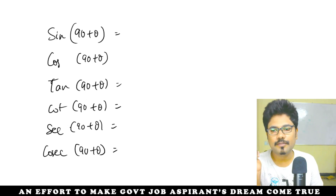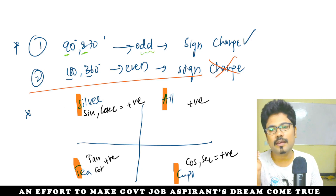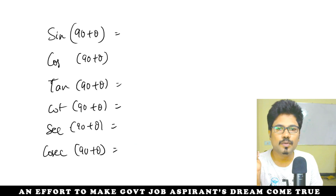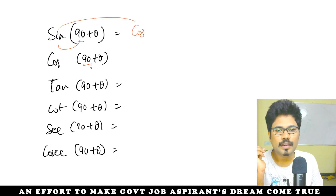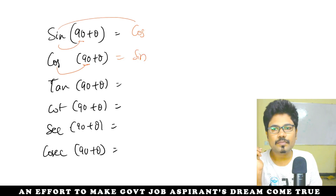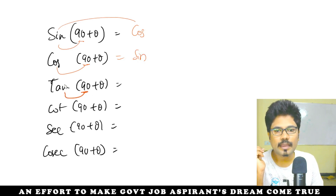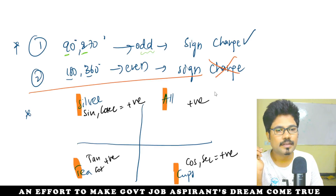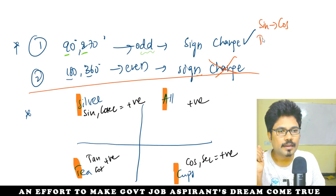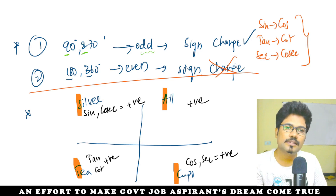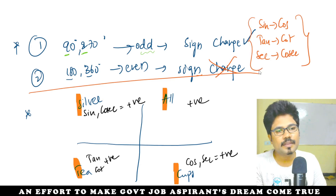First, simple point: 90 and 270 are odd multiples of 90, so sign changes. The sign changes means the function name changes — sin becomes cos, cos becomes sin. At 90, the sign conversion changes. So for 90 plus theta: sin changes to cos, and cos changes to sin. This is vice versa — this is the sign change rule.